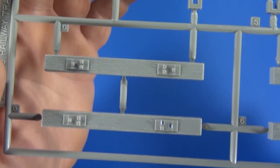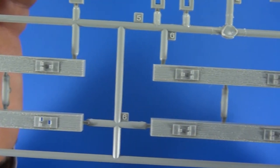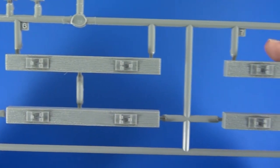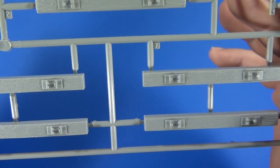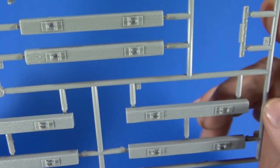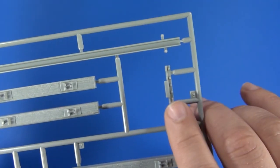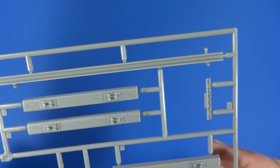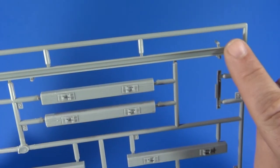The railroad ties have some pretty nice wood grain to them, so those should look pretty nice all weathered up. This here is a track coupler piece and here's your rail.